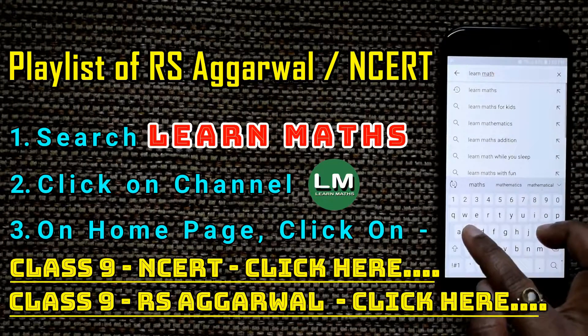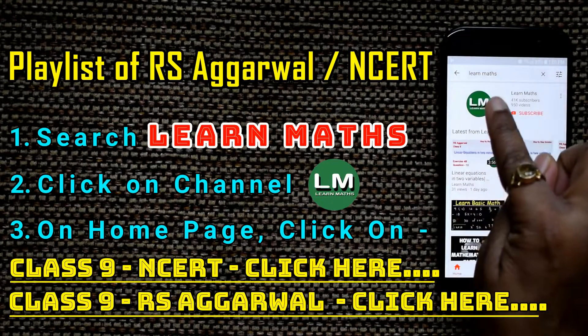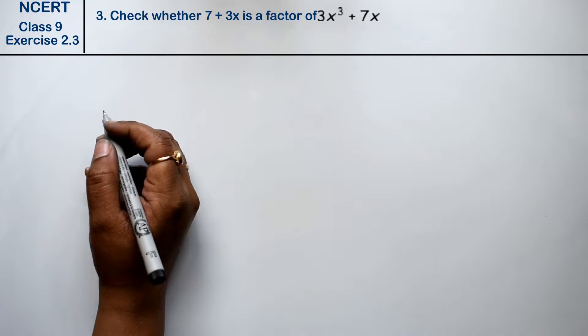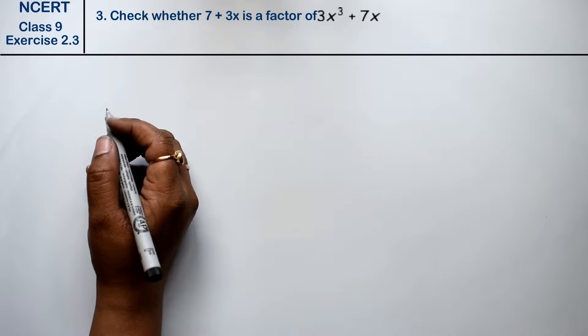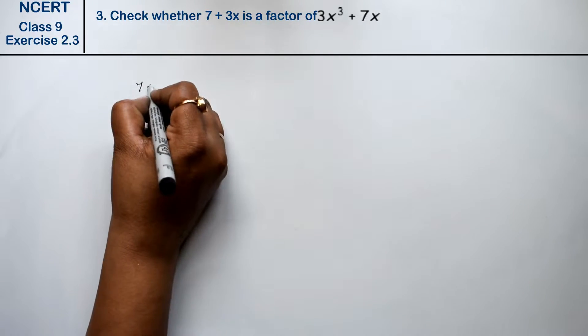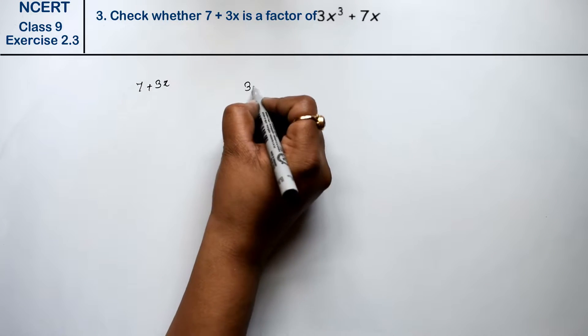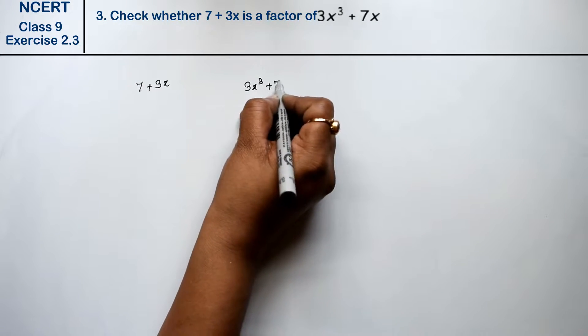Let's do question number third of exercise 2.3, that is polynomial. Question number third is check whether 7 plus 3x is a factor of 3x cube plus 7x.